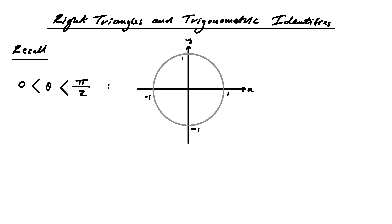I'm choosing θ to be between 0 and π/2 — that's 0 and 90 degrees if you want to think in degrees, but you really shouldn't. This point at the top, by definition, is (cos θ, sin θ). That's the meaning of cos θ and sin θ — the x and y coordinates of this position.